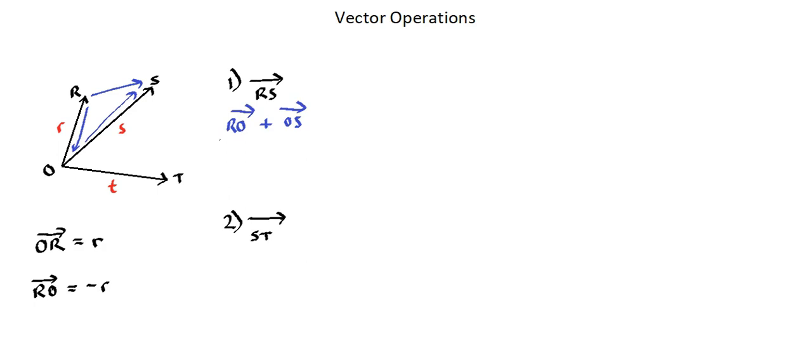So we will change the addition of vector RO to subtraction of the opposite vector OR plus vector OS. Now looking at the small letters R and S in relation to these two vectors. OR is the same as small letter R. So in subtracting vector OR, that's the same as subtracting small letter R. And OS is the same as small letter S minus small letter R plus small letter S, which we can rearrange to simplify as small letter S minus small letter R. And this is vector RS in terms of vectors small letter R and small letter S. Let's go on to example two.